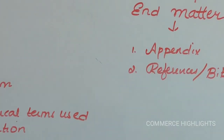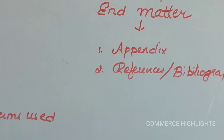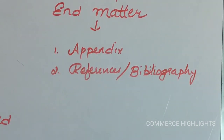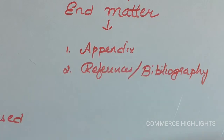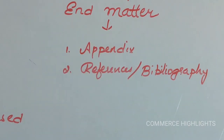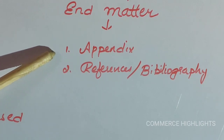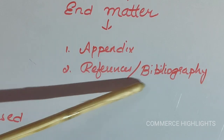Appendix means attachments — questionnaires, reports, financial statements, or any papers used by the researcher to do the research. For example, if the researcher used a questionnaire, it should be attached at the end as an appendix. Similarly, financial statements of a company used should be placed at the end. This is important because if any future researcher wants to do further research on the same topic, this appendix will guide them.